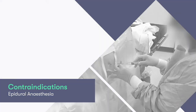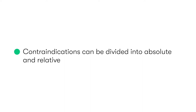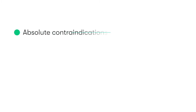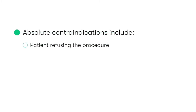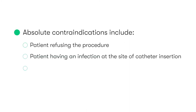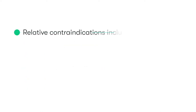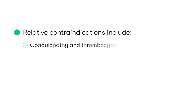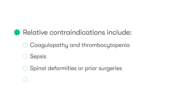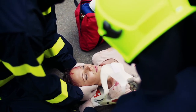Regarding contraindications for epidural anesthesia, these can be divided into absolute and relative contraindications. Absolute contraindications include the patient refusing the procedure, infection at the site of catheter insertion, raised intracranial pressure, an allergy to local anesthetic agents, and uncorrected hypovolemia — given the potential for epidural anesthesia to inhibit sympathetic nerve impulses to arteries, causing vessel dilatation and worsening hypotension. Relative contraindications include coagulopathy and thrombocytopenia, sepsis, spinal deformities or prior surgeries, an aggressive or uncooperative patient, and trauma patients who may have spinal instability.